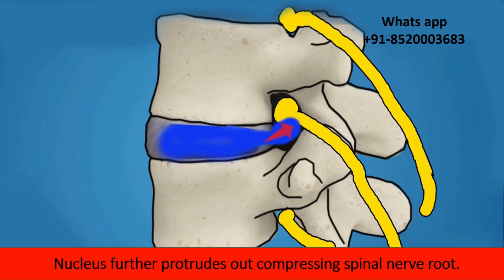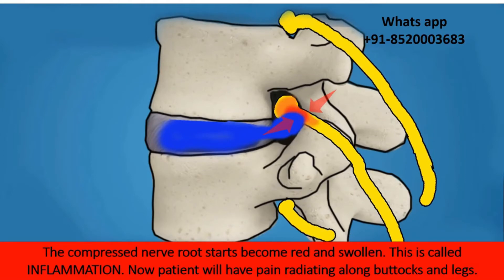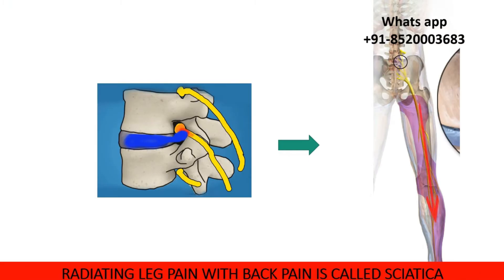The nucleus protrudes further out, compressing the spinal nerve root. The compressed nerve root starts becoming red and swollen — this is called inflammation — and now the patient will have pain radiating along the buttocks and legs. This radiating pain along with back pain is called sciatica.